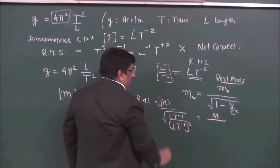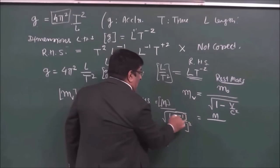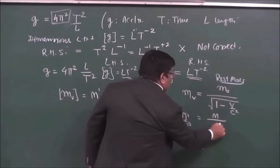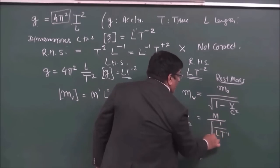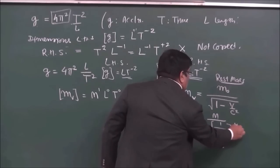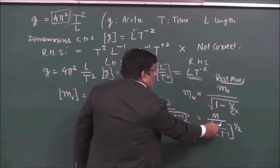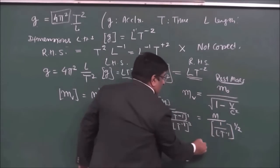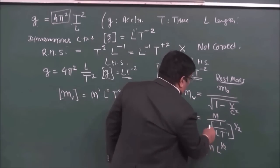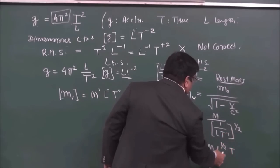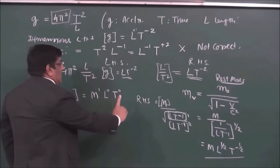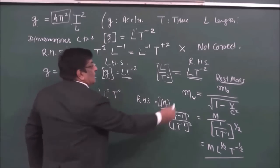Simplifying further: the square root introduces a power of half. The RHS becomes M multiplied by L^(1/2)·T^(−1/2), which does not match the LHS dimension of simply M. So this formula is not dimensionally correct.